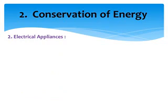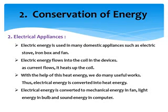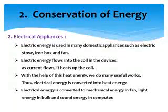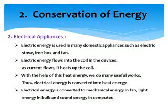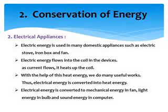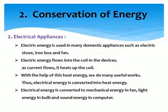The second example is electrical appliances. We have seen about the water dam; now we will see conservation of energy in electrical appliances. Electrical energy is used in many domestic appliances such as electric stove, iron box and fans. Electric energy flows into the coils in the device. As current flows, it heats up the coil. With the help of this heat energy, we do many useful works — thus electric energy is converted into heat energy.